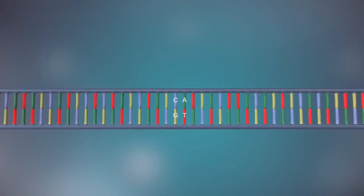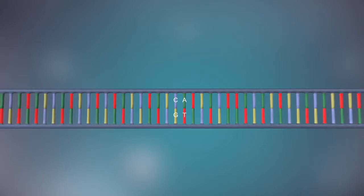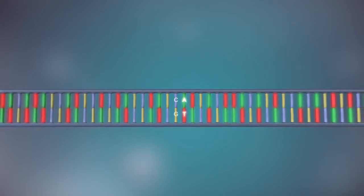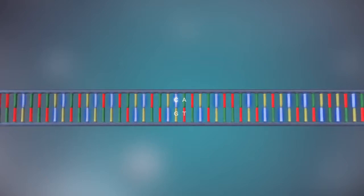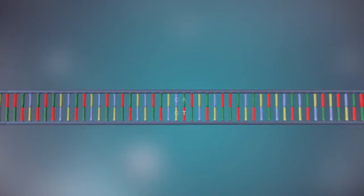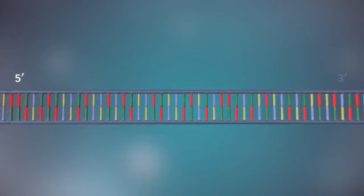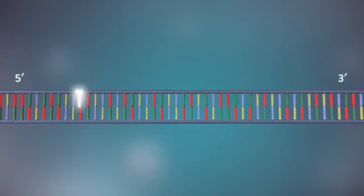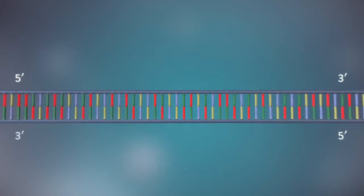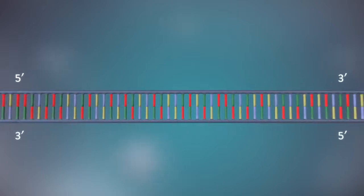The two strands are complementary. This means that wherever there's a T in one strand there will be an A in the opposite strand, and wherever there's a C there will be a G in the other strand. Each strand has a five prime end and a three prime end. The two strands run in opposite directions. This determines how each strand of DNA is replicated.